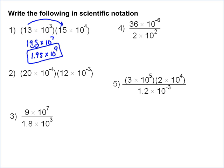20 times 12 is 240. Same thing here: multiply the non-powers of 10 together, so you've got 240 times 10, and this time it's to the negative 7th, because it's 10 to the negative 4th plus 10 to the negative 3rd.